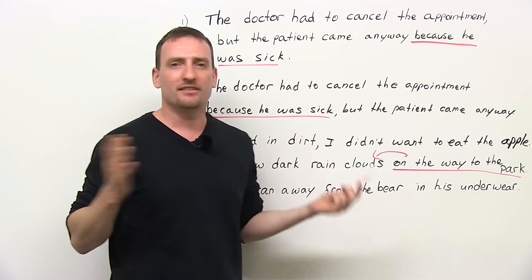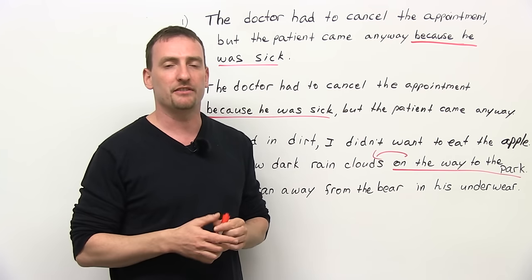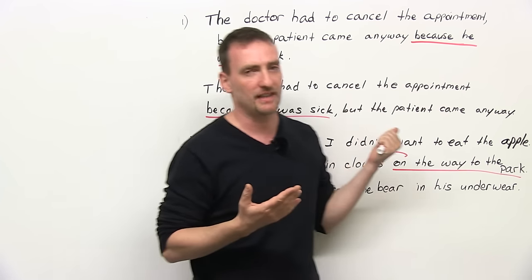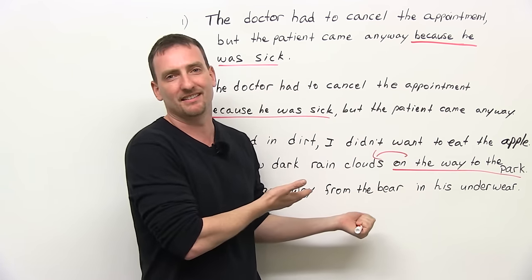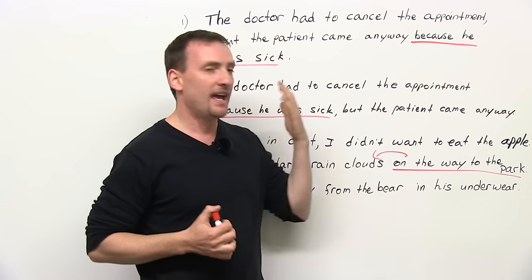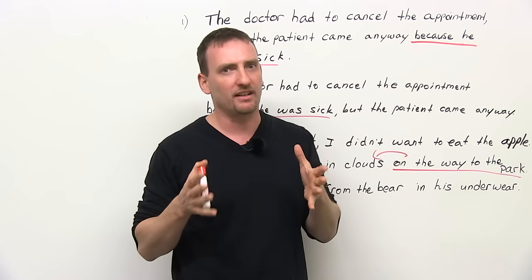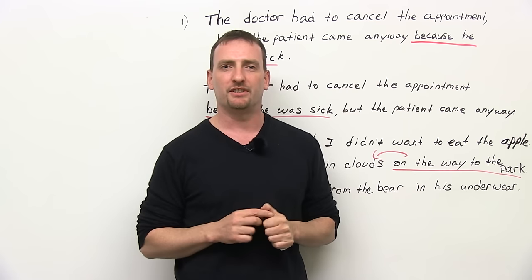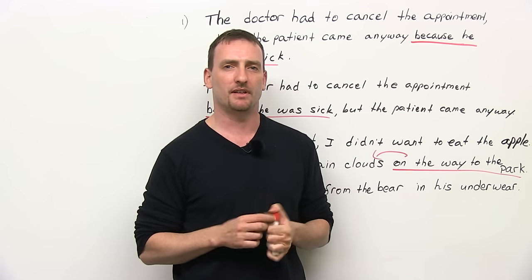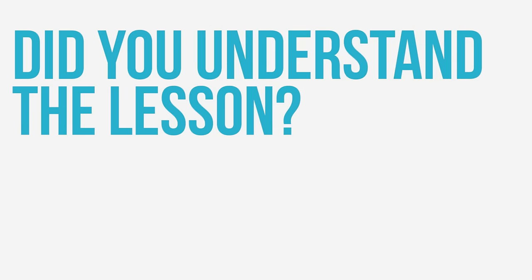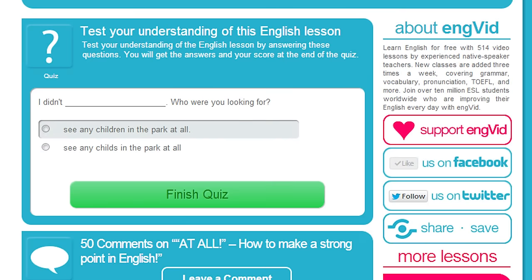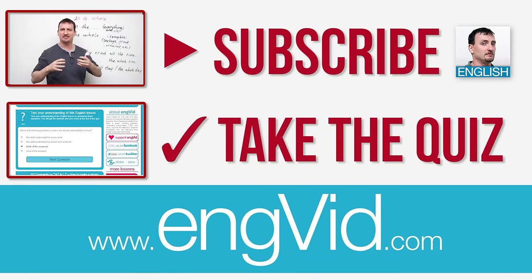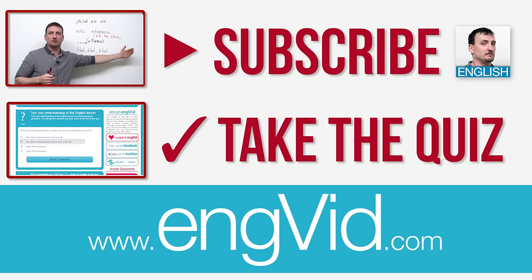So lots of ways to use modifiers, lots of different types of modifiers. Make sure you're putting them as close as possible to the thing you're modifying. This way you avoid misunderstandings and very embarrassing sentences. This needs practice and a little bit of careful reading of what you've written. Go to www.engvid.com — there's a quiz there, you can practice this a little bit more. Please check out my channel on YouTube and subscribe. I'll see you again very soon. Bye.